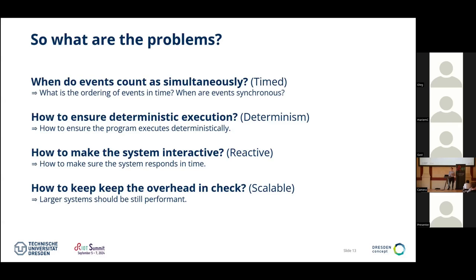So what kind of problems do we want to solve? The first one is timing: when we get two events, when do they count as simultaneous, and when does one come before the other? We want some sense of time, deterministic execution, and also a reactive system — if you press your garage remote, it shouldn't open three minutes later. And it should be scalable — the mutex solution leads to congestion.